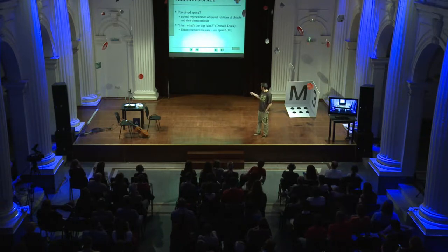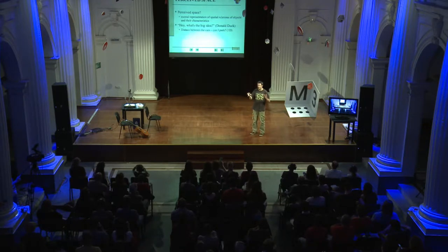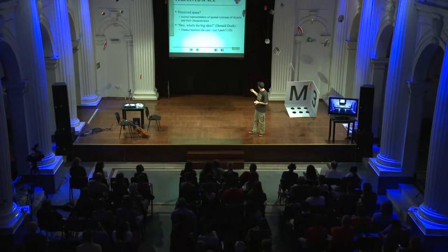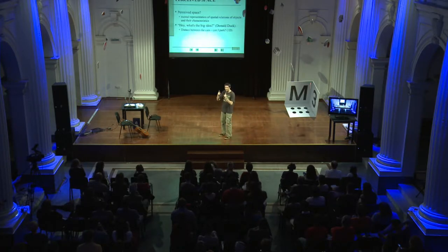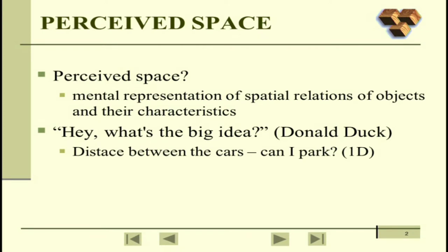I might quote Donald Duck or Paya Patak. What's the big idea about it? Why do we need this representation of space? Just imagine you're judging distance between the cars, you want to park. It happens a lot. You miss, right? It's one-dimensional. You need distance. You usually do it right, sometimes you don't.